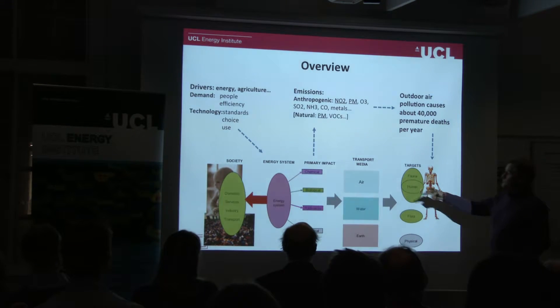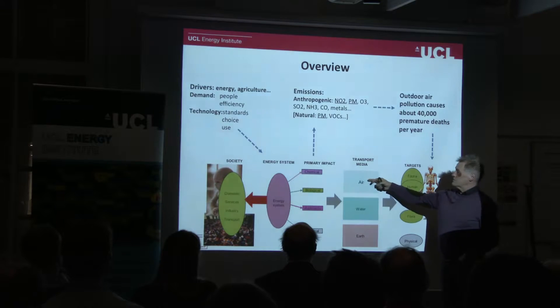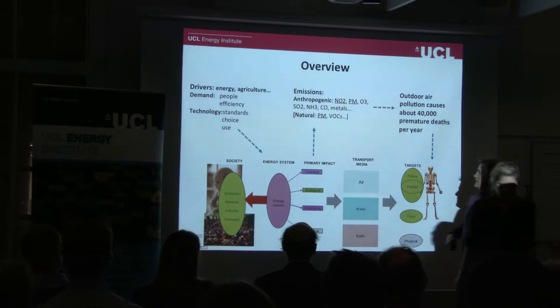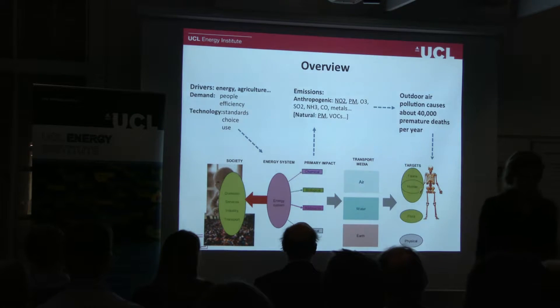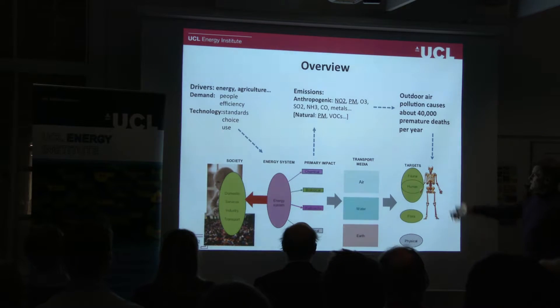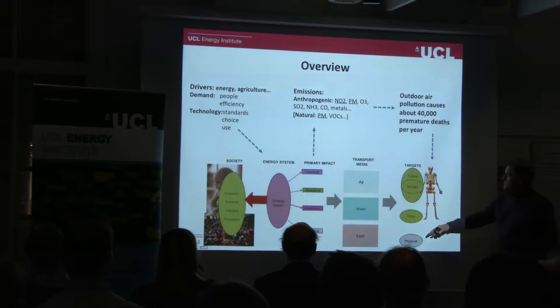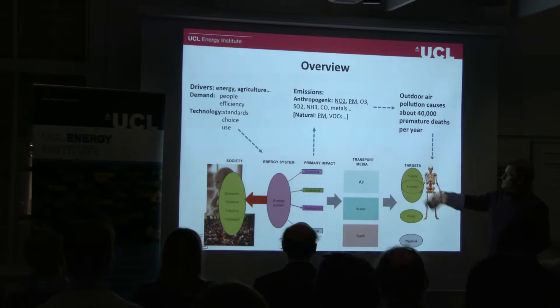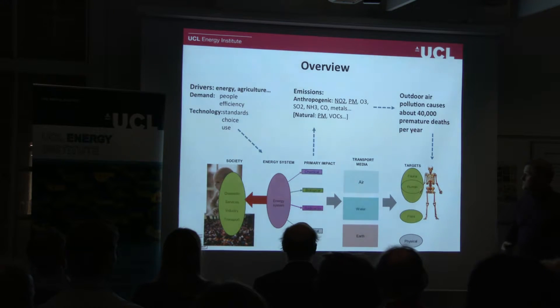For example, NOx is converted to NO2 gradually. Then we have these targets here. We're going to focus on humans today, but obviously also fauna through acid rain and so forth.